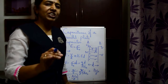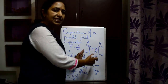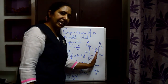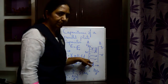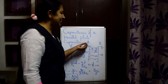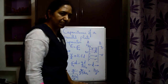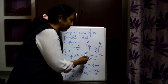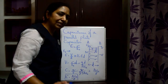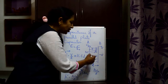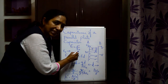Now we are going to derive an expression for the capacitance of a parallel plate capacitor. Here in this figure, we have taken two conducting plates A and B, parallel to each other and separated by a certain distance D. Plate A is given a positive charge Q and plate B is given an equal negative charge. Let the surface charge density of plate A be plus sigma and of plate B be minus sigma.